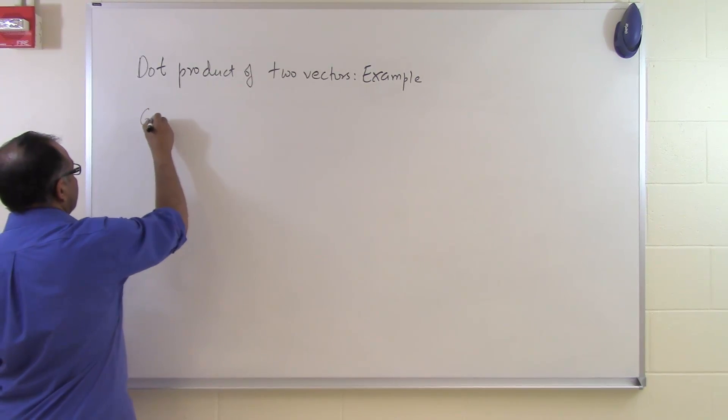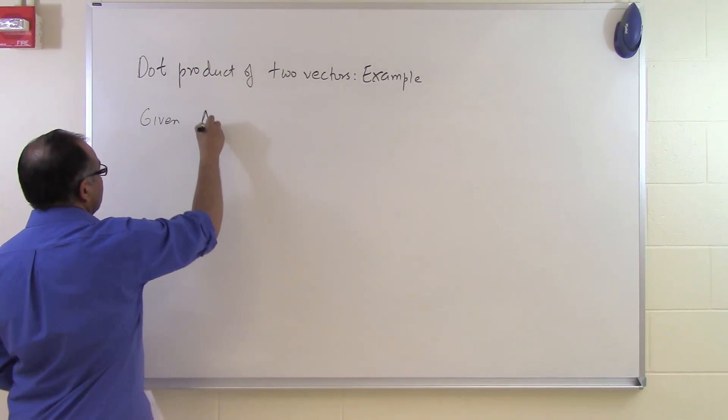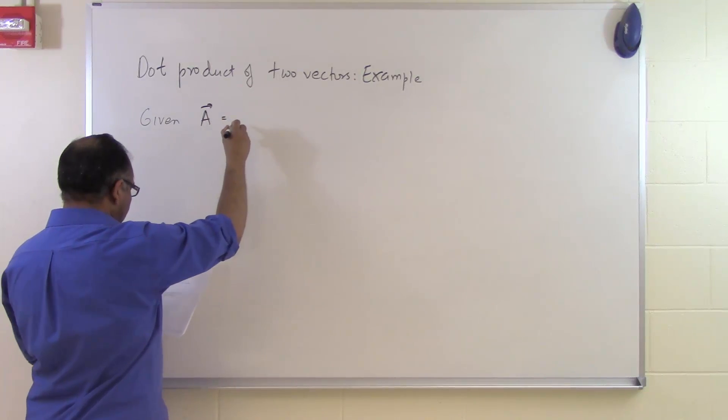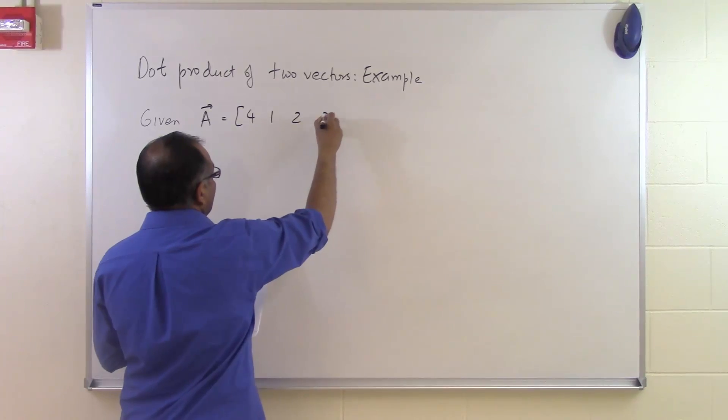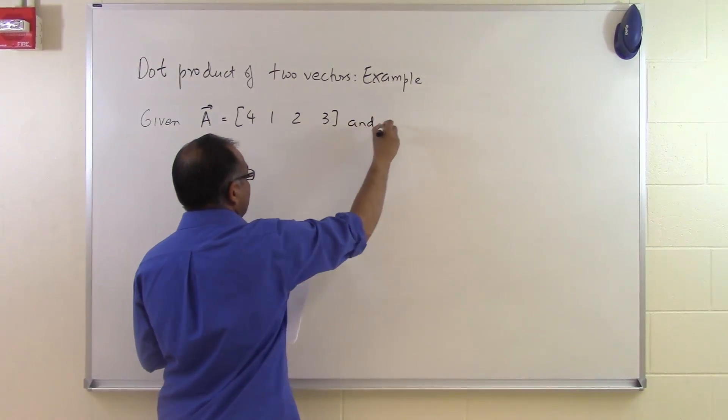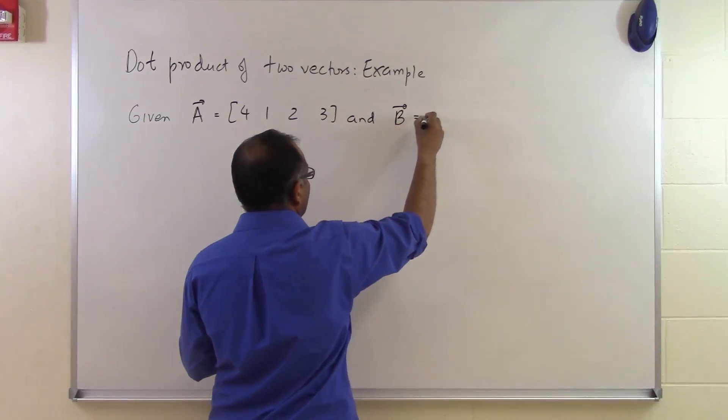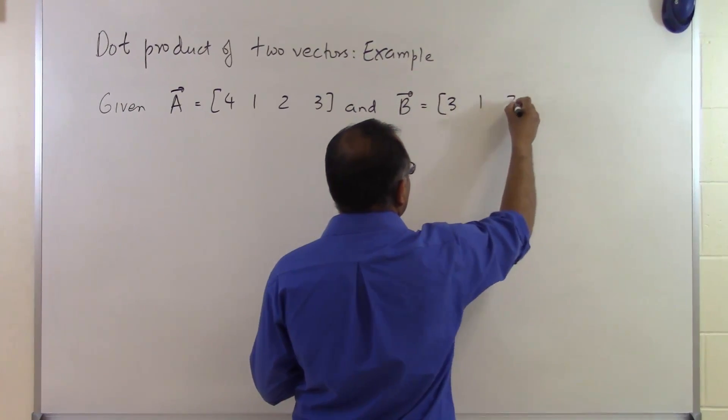So let's suppose the problem statement is saying that given the A vector as 4, 1, 2, and 3, and the B vector is also given to us as 3, 1, 7, and 2.